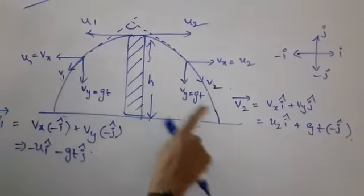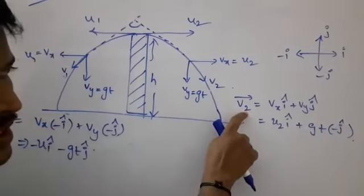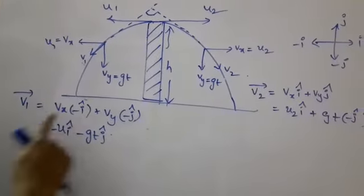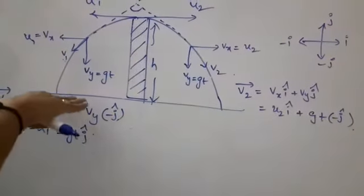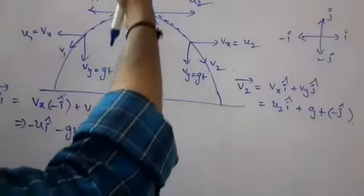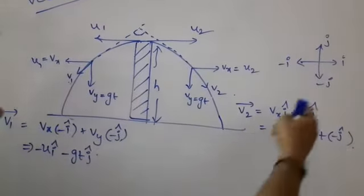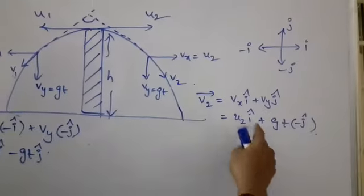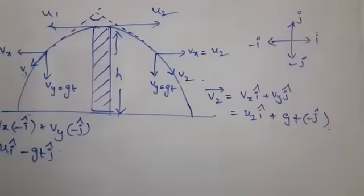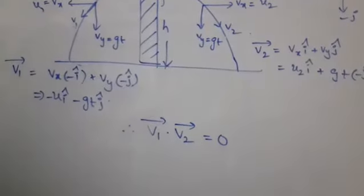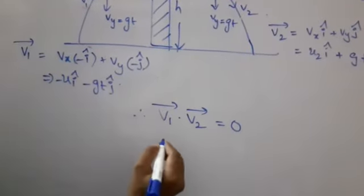If velocity vectors are mutually perpendicular, the condition is V1·V2 = 0. The final velocity of the first body has horizontal component minus U1 (i-cap) and vertical component minus G·T (j-cap). V2 has horizontal component U2 (i-cap) and vertical component minus G·T (j-cap). The dot product V1·V2 = 0.